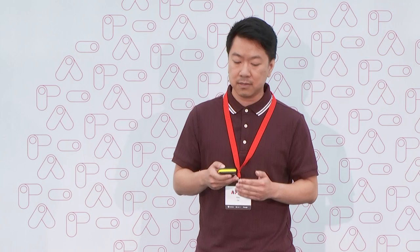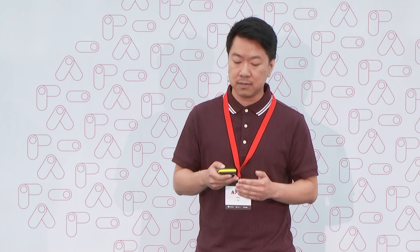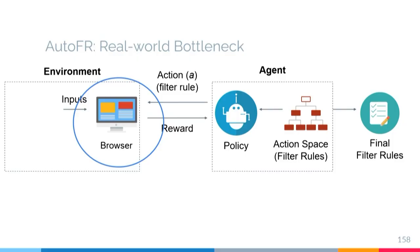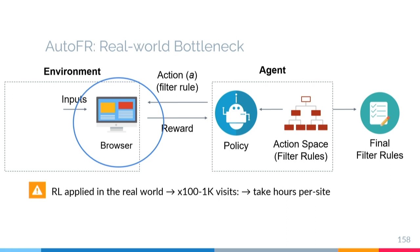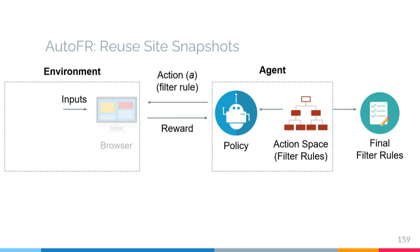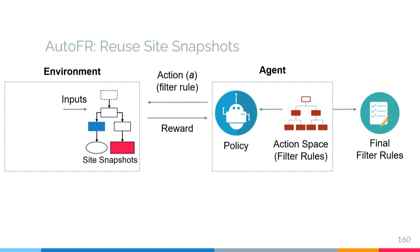To implement this framework as a practical tool, we focus on a real-world bottleneck: waiting for the site to load its legitimate content and its ads. When applying reinforcement learning, we actually have to visit the same site hundreds to thousands of times for the algorithm to converge, which may take hours. To address this bottleneck, we use the concept of site snapshots — a graph representation of a site and how it's loaded — and collect around 10 of them to reuse.